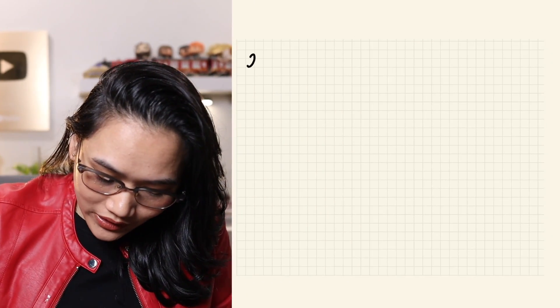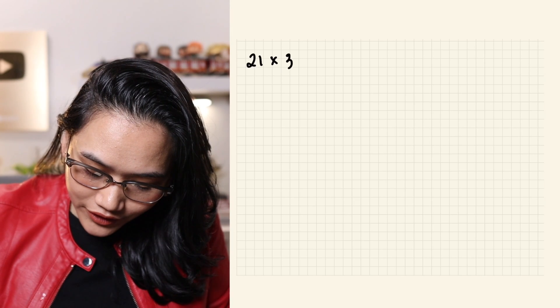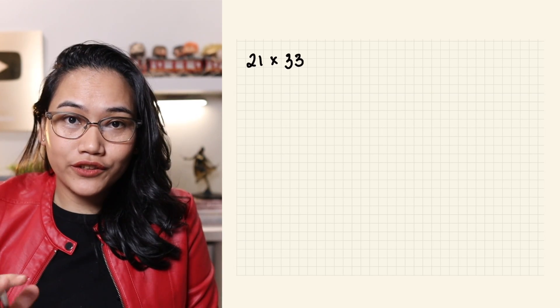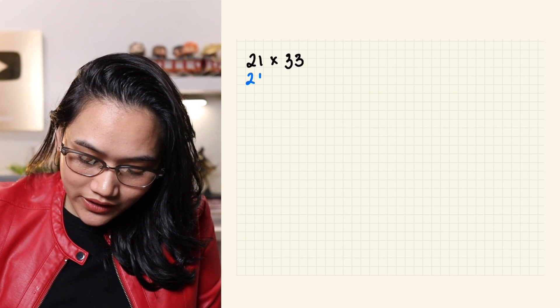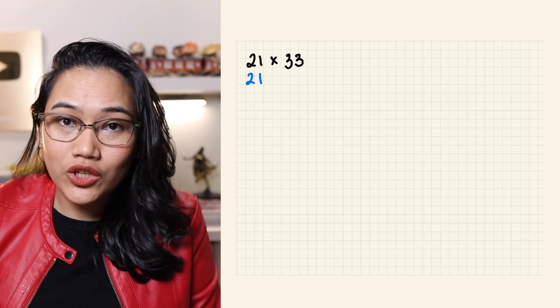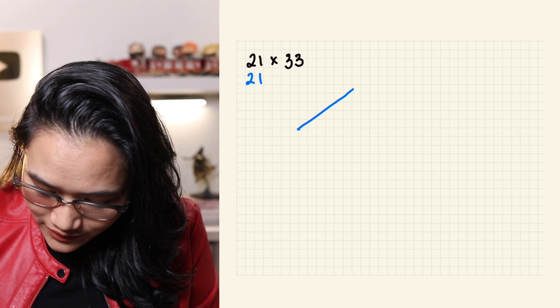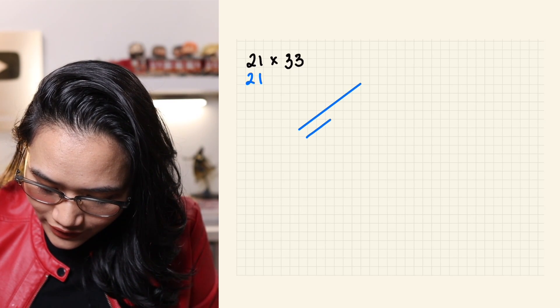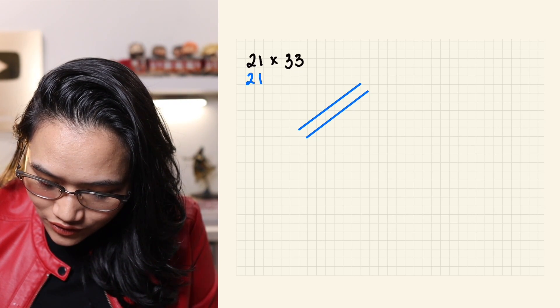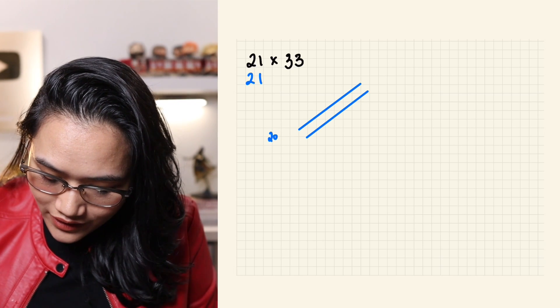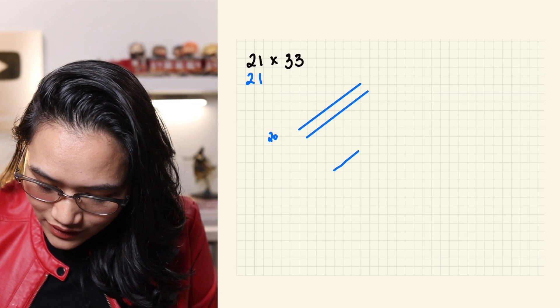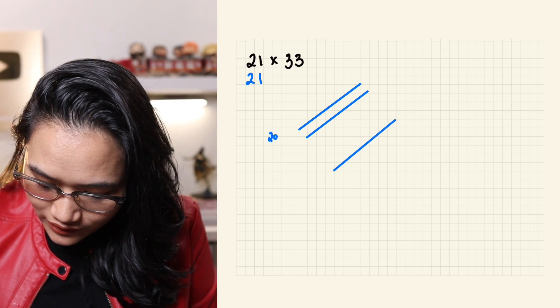Let's try with this problem: 21 times 33. The first step here is to draw 21. We use lines to represent 21. So, first, we have this for 10, another 10. Two lines in this direction because this is the 20. And then, one line here at the bottom to represent 1. That's 21.